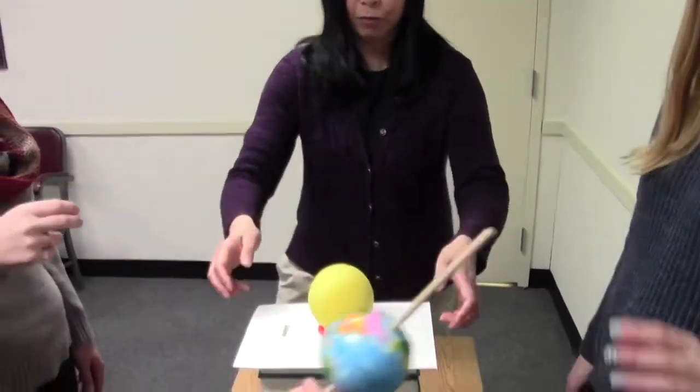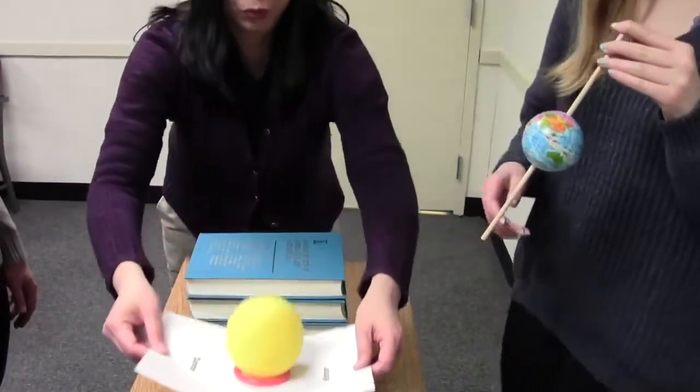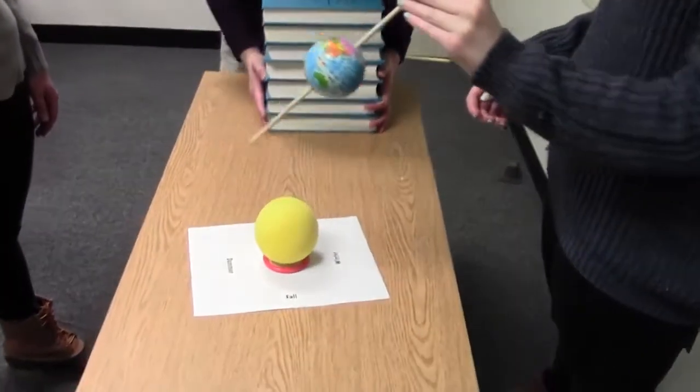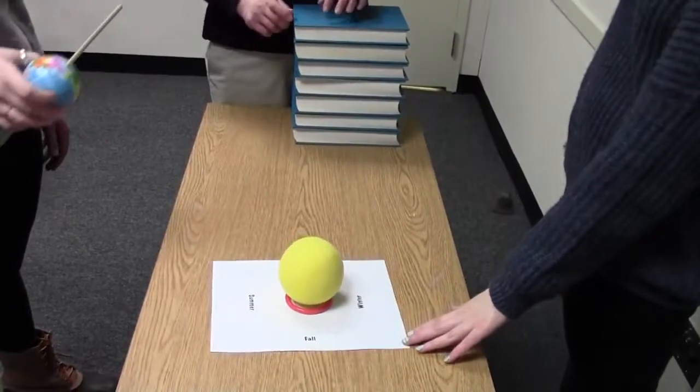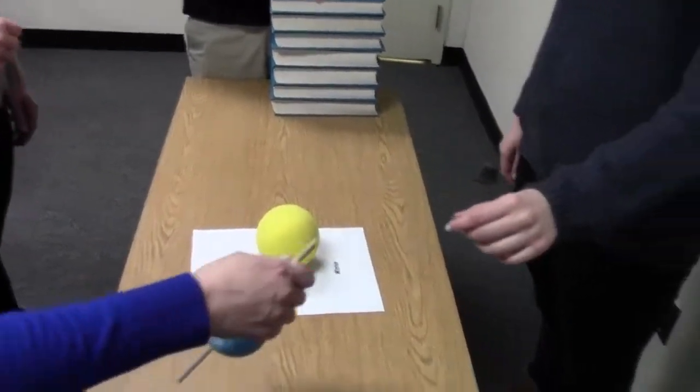Which is why we have this stack of books because the problem is even worse if you have this. This is how students will do this, and the Earth is not actually orbiting the Sun.